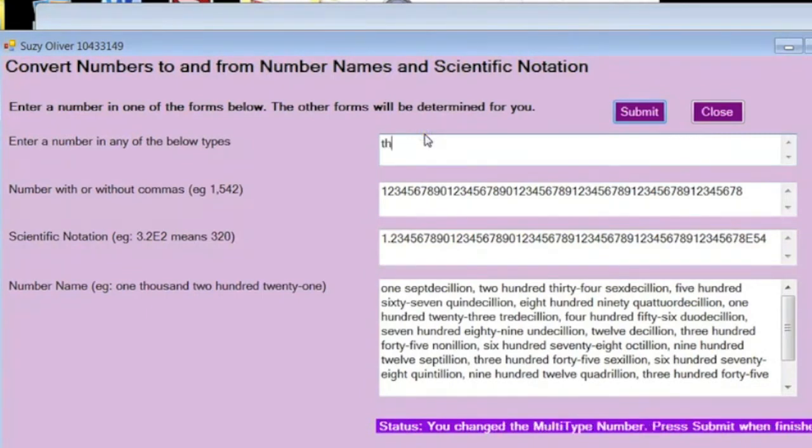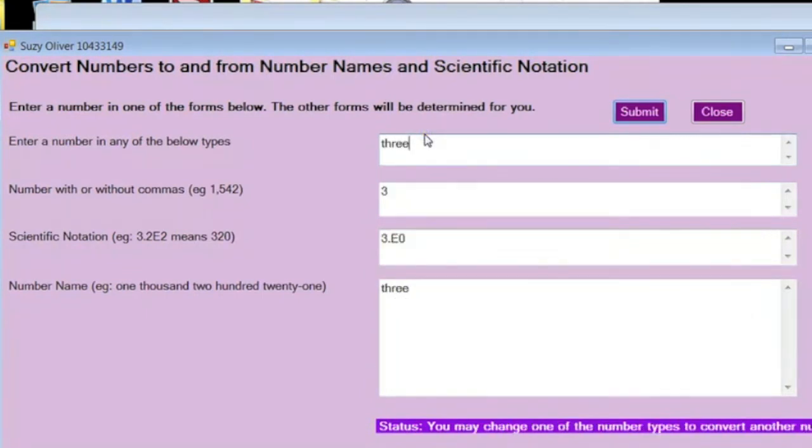So if you put in like 3, it recognizes that. And notice the scientific notation, you've got 3, and then the decimal point, and then any other digits that are involved, if any. And then you have an e, and whatever the e means, 10 raised to the power of whatever follows. So in this case, this is 3 times 10 to the 0 power.